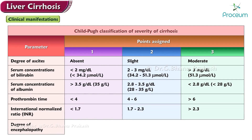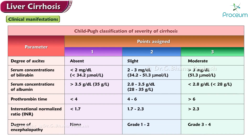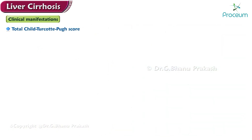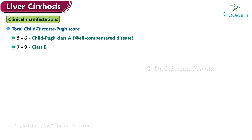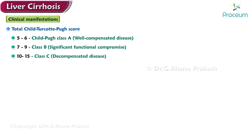For the final parameter, encephalopathy: one point if no encephalopathy; two points if grade 1 to 2; and three points if grade 3 to 4. A total Child-Turcotte-Pugh score of 5 to 6 is Class A (well-compensated disease); 7 to 9 is Class B (significant functional compromise); and 10 to 15 is Class C (decompensated disease).